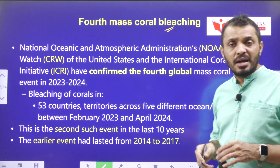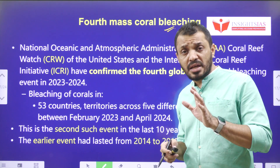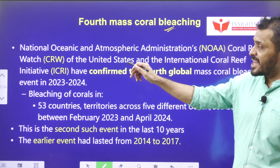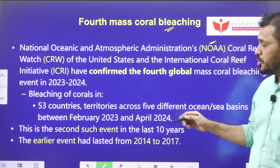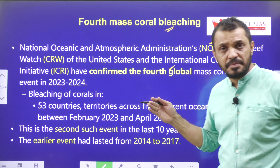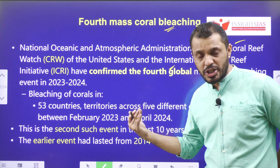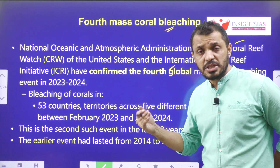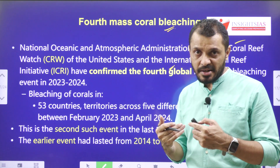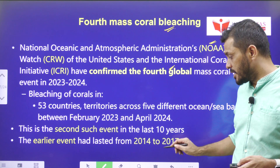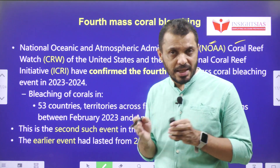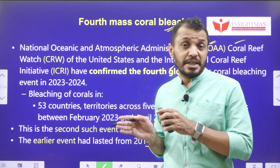Regarding mass coral bleaching: certain organizations declare whether a bleaching event qualifies as mass bleaching. These organizations are NOAA CRW (Coral Reef Watch) and ICRI (International Coral Reef Initiative). Currently, these organizations have declared that we are seeing the fourth mass coral bleaching event. The third mass bleaching occurred from 2014 to 2017. The fourth mass bleaching has been happening from 2023 into 2024, mainly due to heat waves and El Niño conditions.